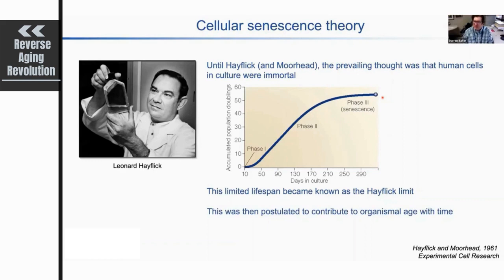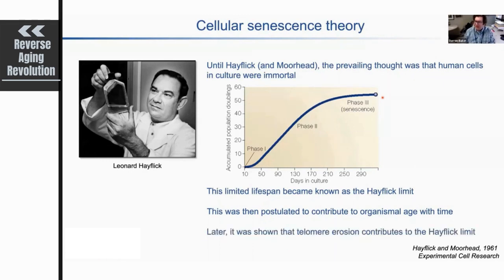It didn't take long for this to be conceptualized as underlying the aging process in individuals — the idea being that with advancing time, our cells are no longer able to divide and replenish themselves, leading to increasing organismal age. In later studies, it was found that the key regulator of this senescence effect, at least in vitro in human fibroblasts, was the erosion of telomeres. When telomeres became critically short, cells were unable to divide any longer — providing the molecular understanding of the Hayflick limit.